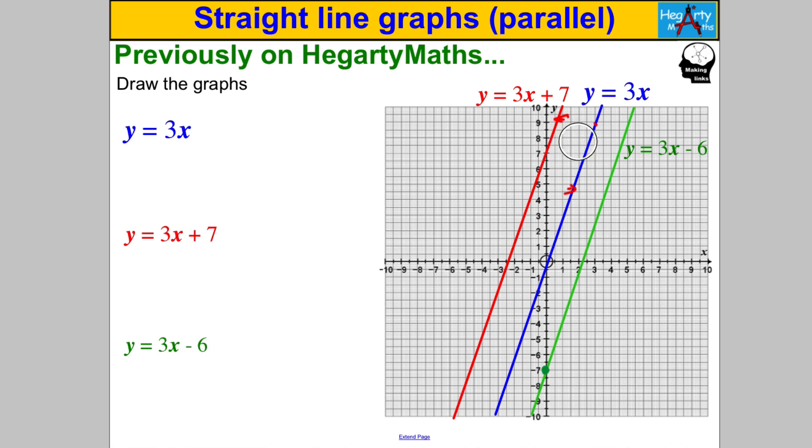The other way you know they're parallel is that they've got therefore the same gradient. Because the gradient here M is 3, because the gradient here M is also 3, and because the gradient here M is 3, we call all of these lines parallel. They have the same gradient.